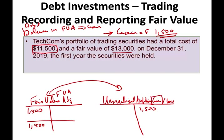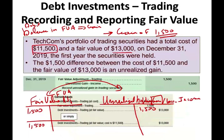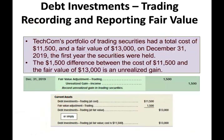So this is how we adjust the portfolio. The journal entry is: debit fair value adjustment — trading $1,500, credit unrealized holding gain $1,500. This is how we account for the adjustment at end of period.